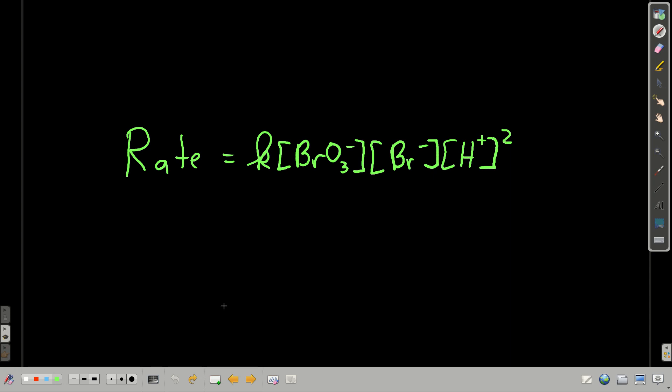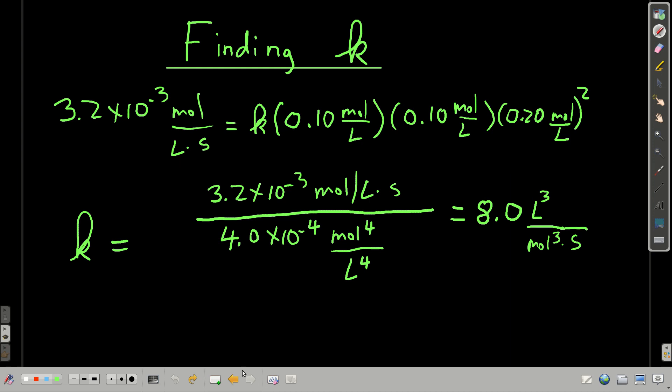Now we're going to find k, the rate constant. All we have to do to find k, now that we know the form of the rate law, is pick any of the experiments. Plug in the concentrations, plug in the rate. So I picked experiment 4, where the rate was 3.2 times 10 to the minus 3 moles per liter second.